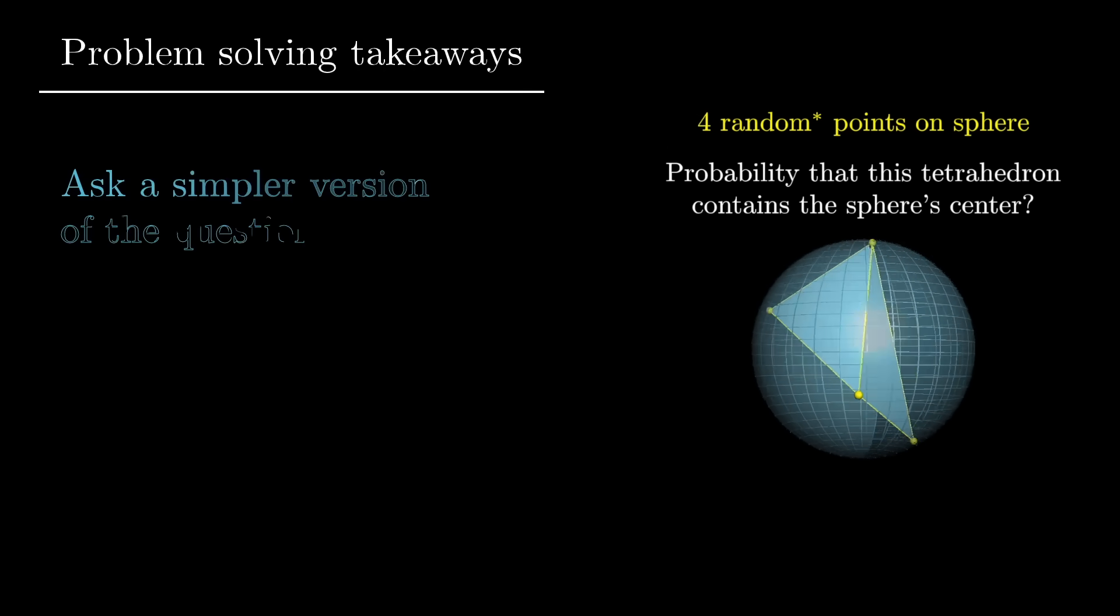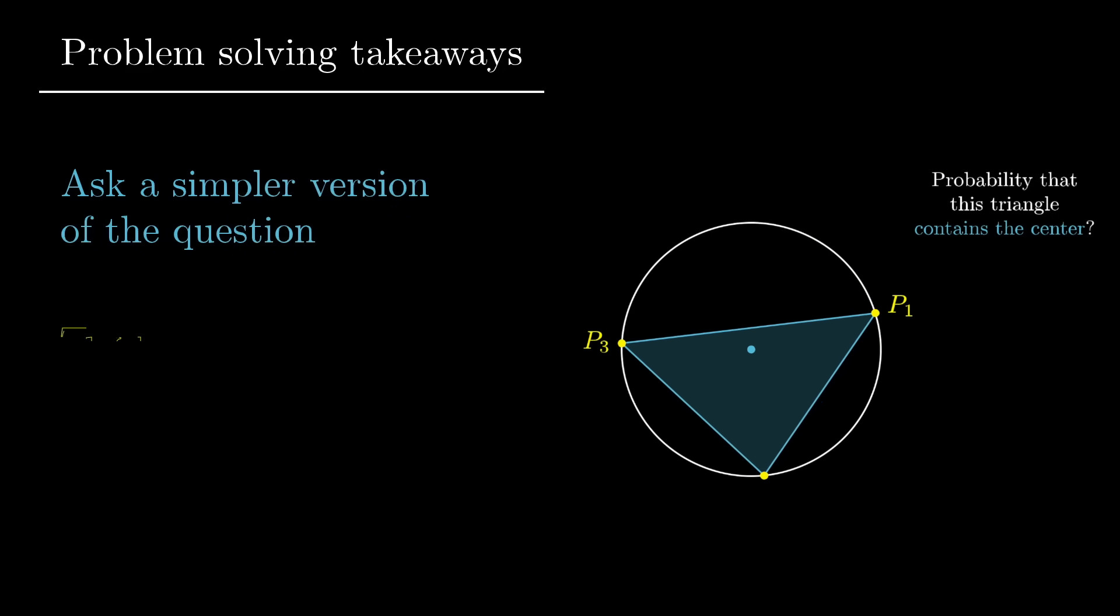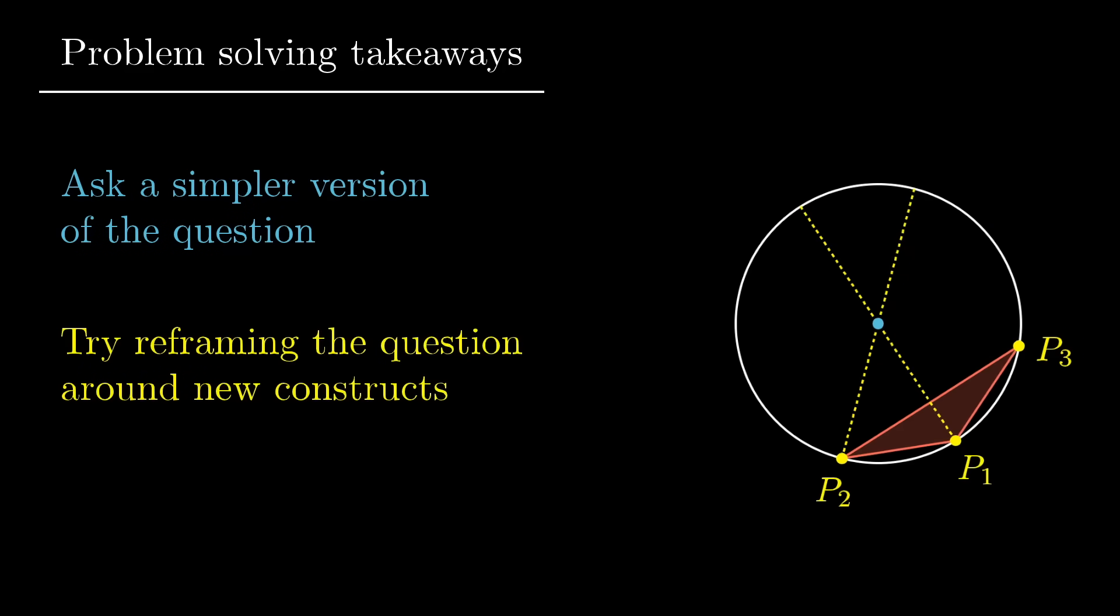Namely, just keep asking simpler versions of the question until you can get some kind of foothold. And then when you do, if there's any kind of added construct that proves to be useful, see if you can reframe the whole question around that new construct.